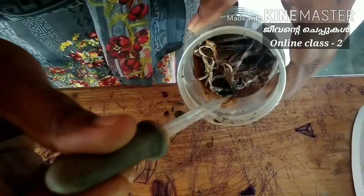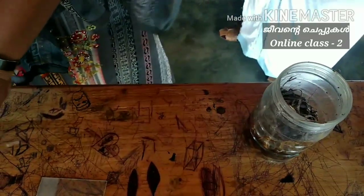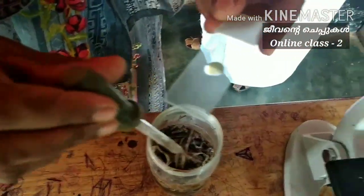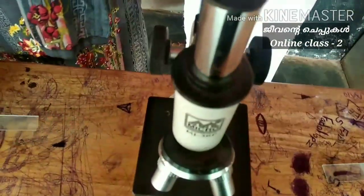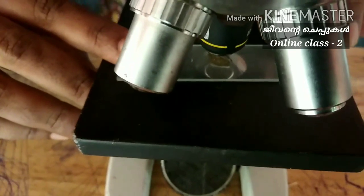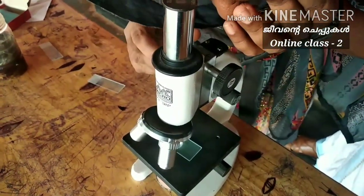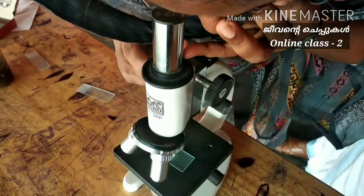I am making the water from the rice. We are going to make a drop on the slide. Now we are going to slide the cover glass and place the drop under the microscope. We can put the specimen in our microscope.